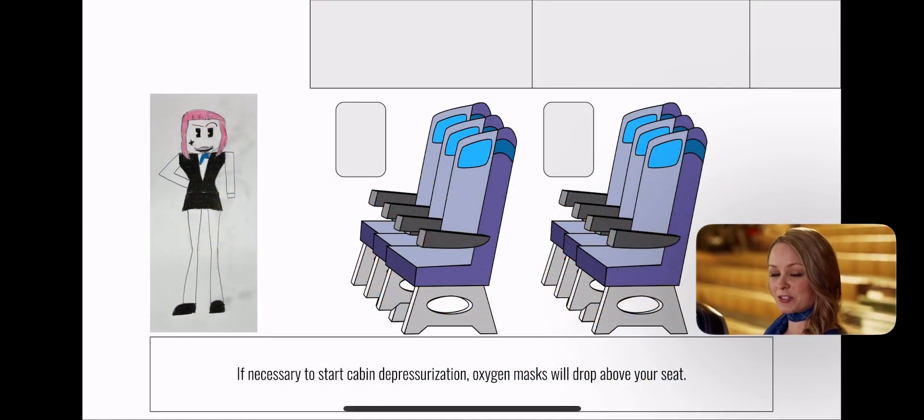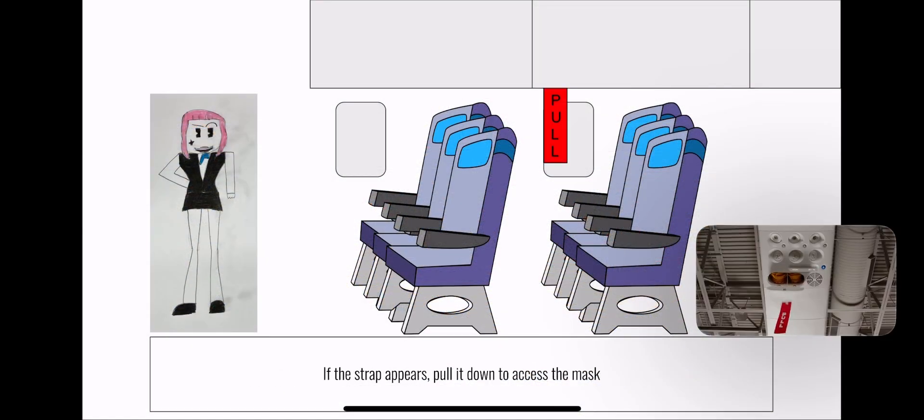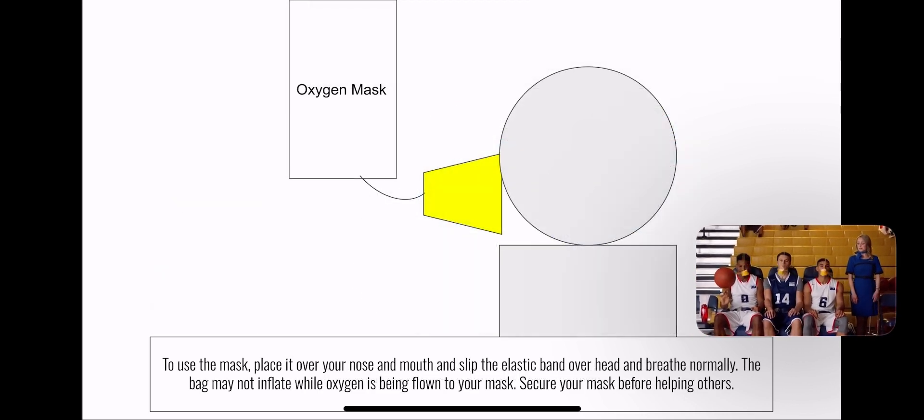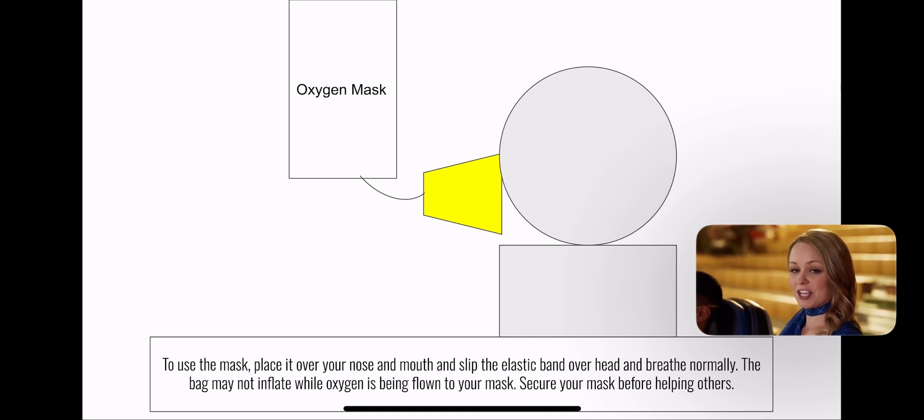If necessary, an oxygen mask will drop from above your seat. If a strap appears, pull down on the strap to access your mask. Firmly pull the mask to extend the tubing. Place the mask over your nose and mouth and slip the band over your head. The band does not require adjustment.